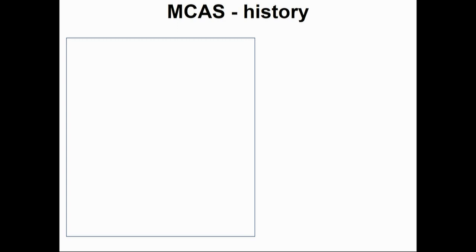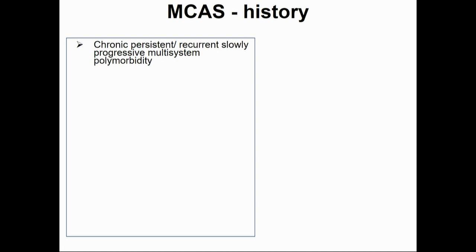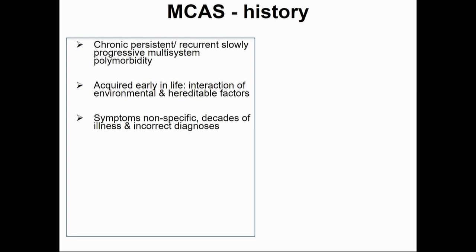They may have a long history of either chronic persistent symptoms with stepwise worsening and polymorbidity, whereas they actually look quite well. Often it's an interaction between environmental and heritable factors. The symptoms are often non-specific, and there may be years of illness and incorrect diagnoses — often being told that it's all in their heads.